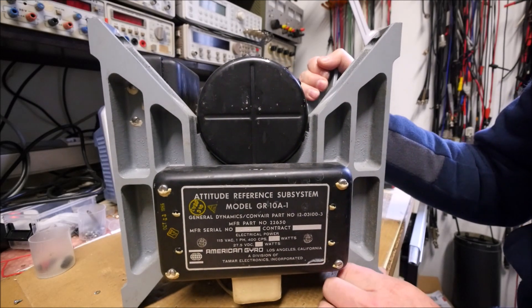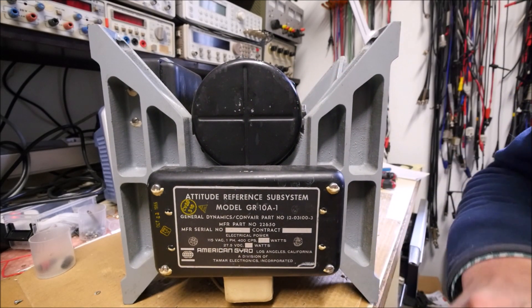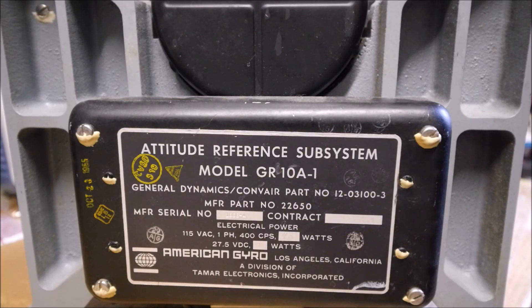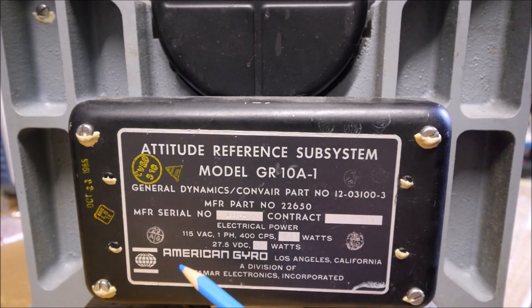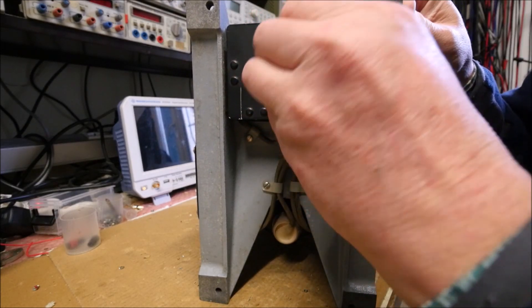We can see first this sticker which is identification of that device. So it is called Attitude Reference Subsystem, Model GR10A-1. There are some information regarding the power supply. We can see that thing. There is on that side the connector. The circular connector.